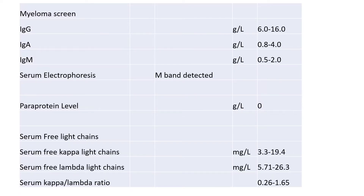This is a typical set of myeloma screens. At the top you'll see the immunoglobulin panel, looking at the different levels of IgG, IgA, and IgM. You'll see the serum electrophoresis, which tells us whether or not a monoclonal band has been detected. The paraprotein level quantifies this, telling us how much it is. At the bottom you'll see the serum-free light chains — also a blood test — which looks at how many of the individual immunoglobulin chains are floating around and their ratio.